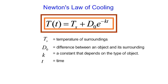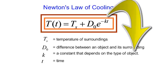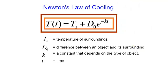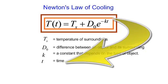K is a constant and it depends on the type of object. Certain things cool or heat up at a different constant. T, of course, is time.